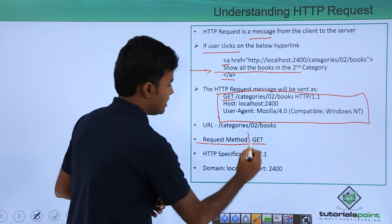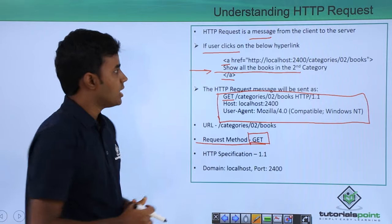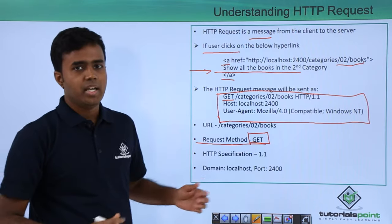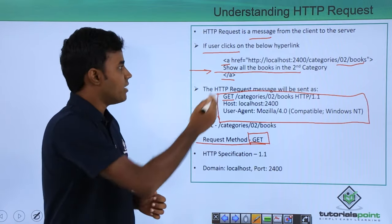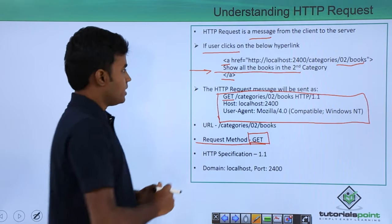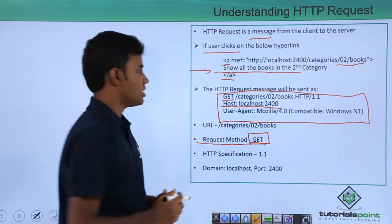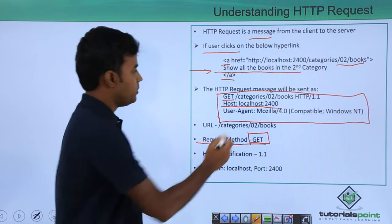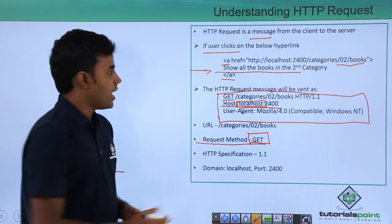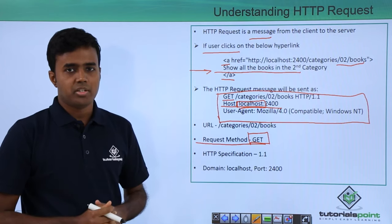GET symbolizes that I need to get the resource that is available at this particular location — basically, I need to get the book which is available in the second category. The next thing is the host and the protocol. This could be anything like Google.com or Microsoft.com, and this is the port at which that particular application is running.